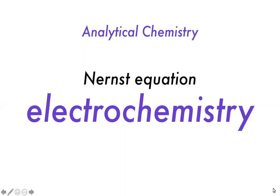Good morning everyone. Let's get started with electrochemistry. We're going to talk about the Nernst equation and then move on to electrodes, using electrochemistry as an actual probe in instrumental chemistry — analyzing concentrations or detecting the presence of ions. We'll talk about how those electrodes can help us, with a specific example being pH meters. pH meters are a very good example of the use of these electrodes.